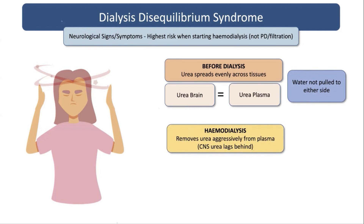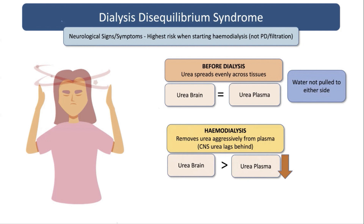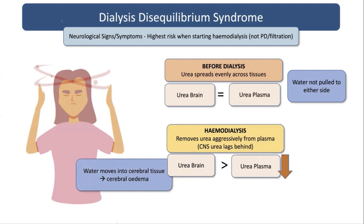But then if we do hemodialysis and aggressively remove urea from the plasma, what can happen is we reduce the plasma urea, but the brain urea levels are lagging behind. So the urea in the cerebral tissues is going to be higher than that of the plasma, and now water behaves differently — it's drawn toward that urea in the brain tissue, moves in, and that can lead to cerebral edema.